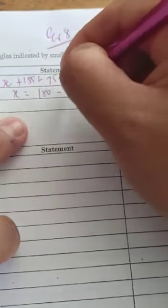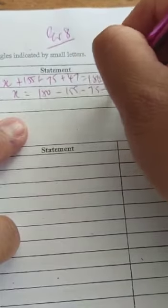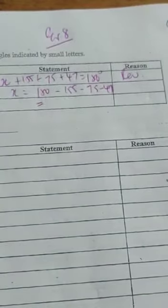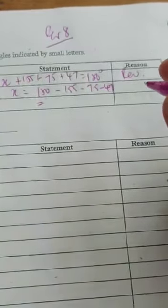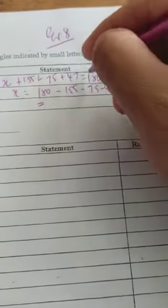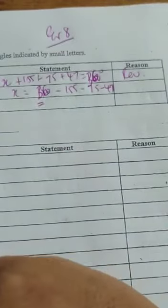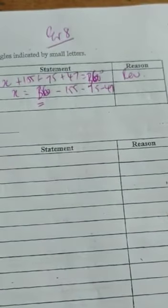So we're going to say x plus 155 plus 75 plus 47 equals 180. So x is equal to 180 minus 155 minus 75 minus 47. So that works out to be negative 22, not 180, but 360. My mistake there. It'll be 360 degrees, so it's 158 degrees.